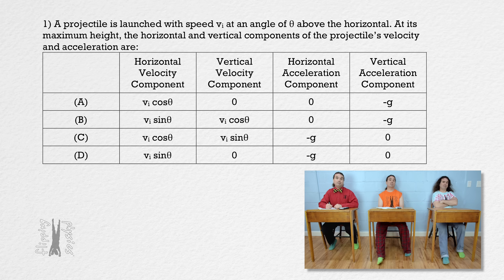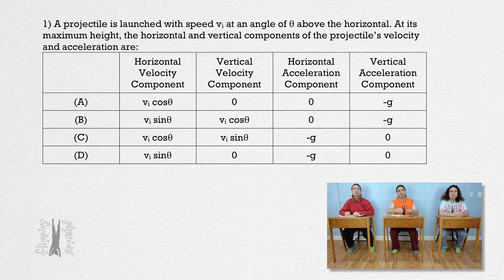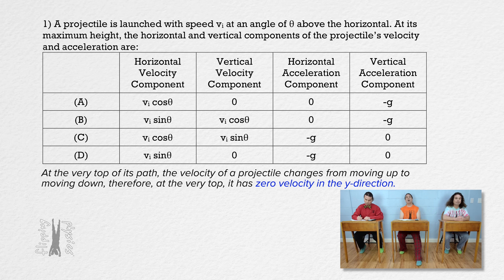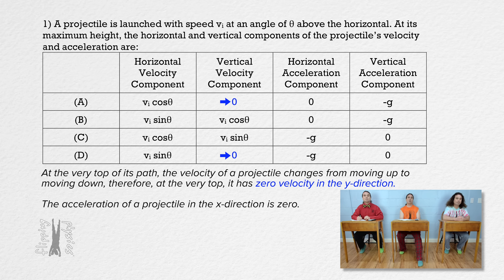It's a projectile motion problem with an initial velocity at an initial angle with the horizontal. At the very top of its path, the velocity of a projectile changes from moving up to moving down. Therefore, at the very top, the projectile has zero velocity in the y direction. That means the answer is either A or D. An object in projectile motion has zero acceleration in the x direction. The only options with zero horizontal acceleration are in A and B, so the correct answer must be A.